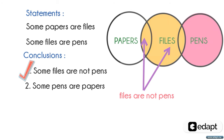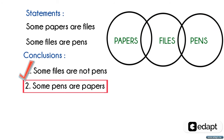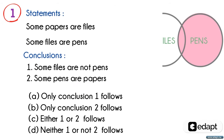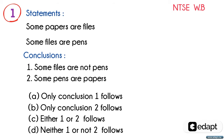The second conclusion is: some pens are papers, which means that some portion of pens must be in papers. But here the papers and pens do not touch each other. Hence, it's a false conclusion. Finally, we get that only conclusion one is true and the answer is option A.